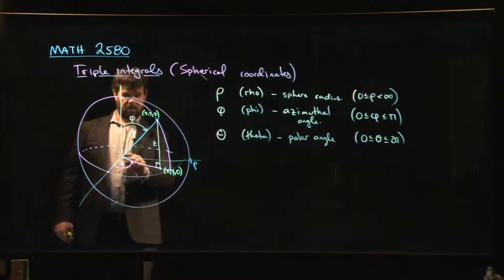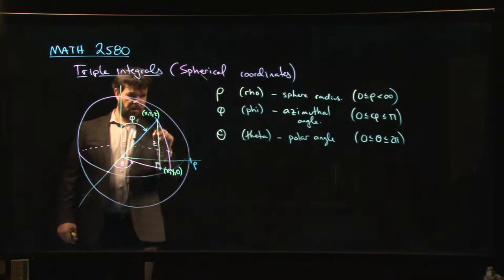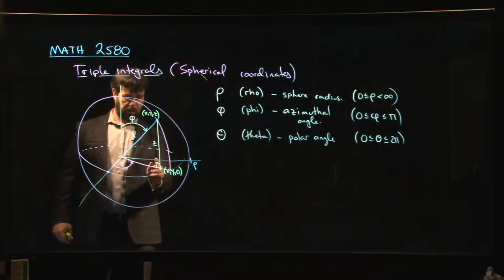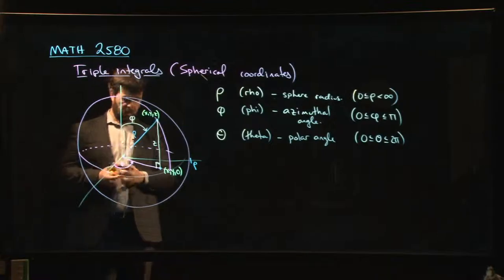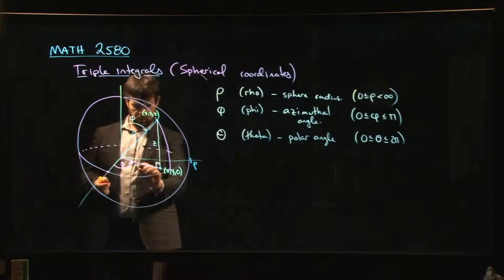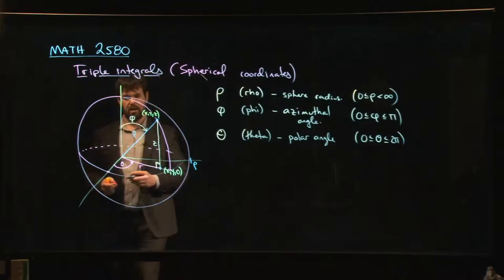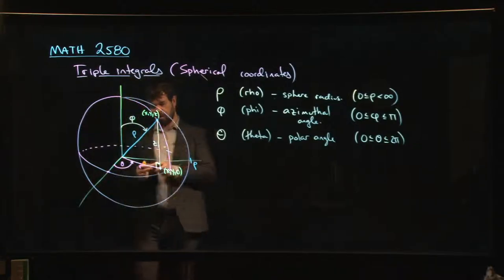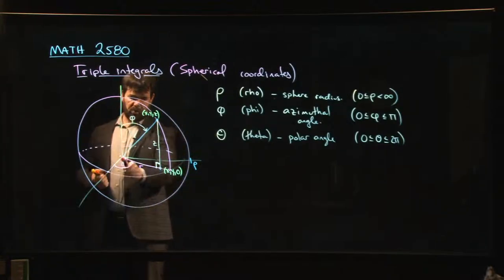and notice that this has to be a right angle. It has to be a right angle, because this line is in the x, y plane. This line is perpendicular to the x, y plane. And I kind of already know what that is. That's r. So, you actually have those cylindrical coordinates.